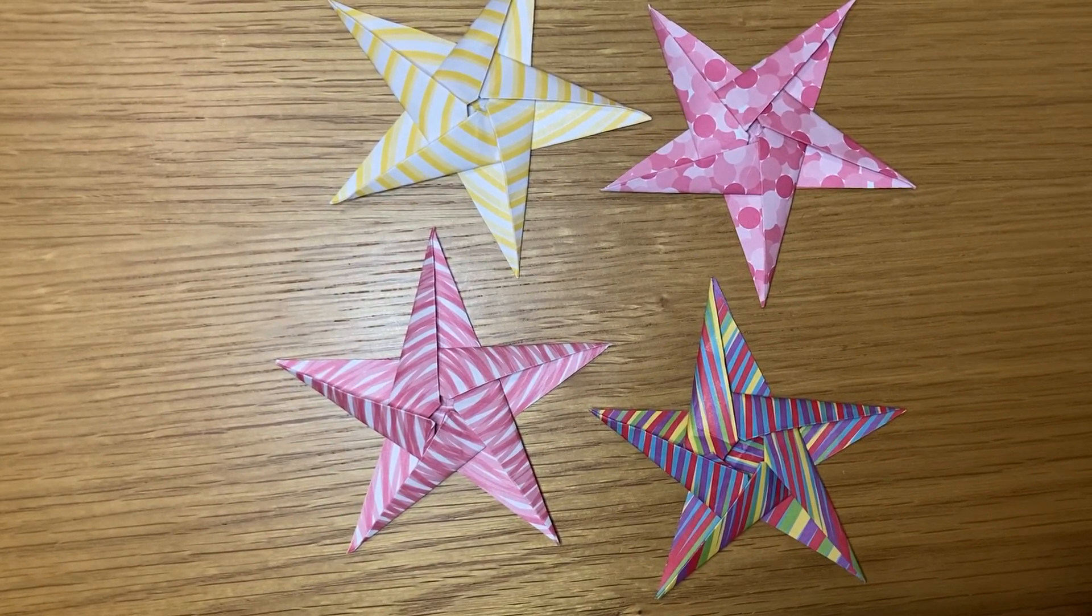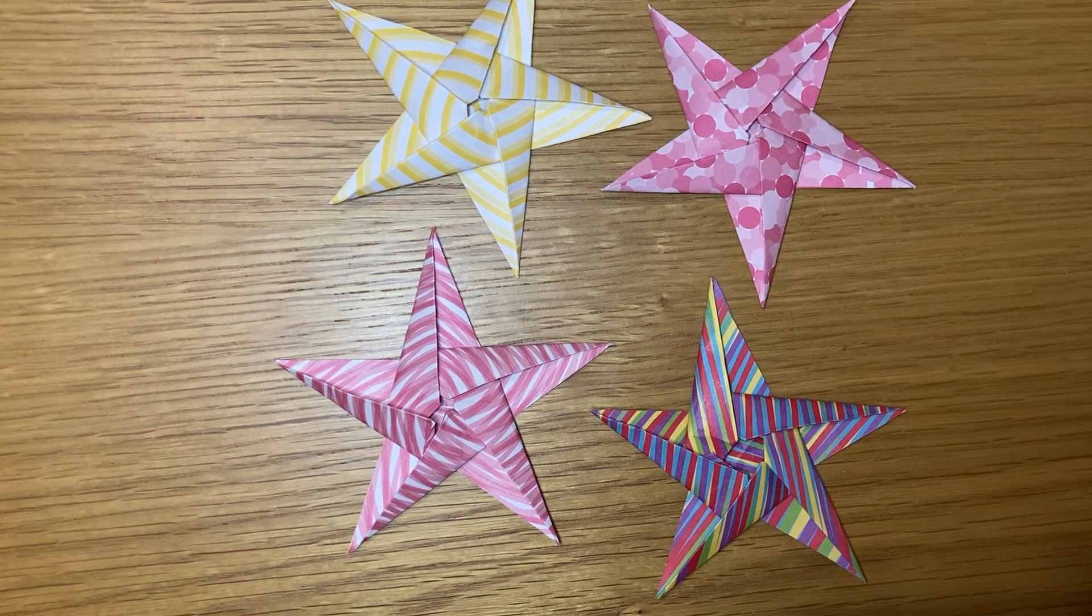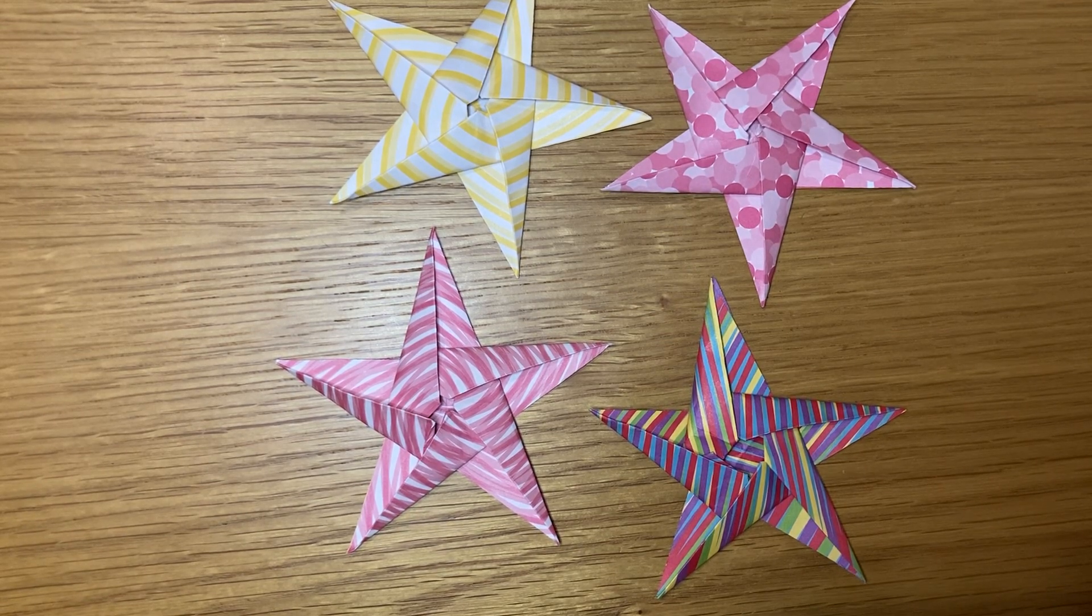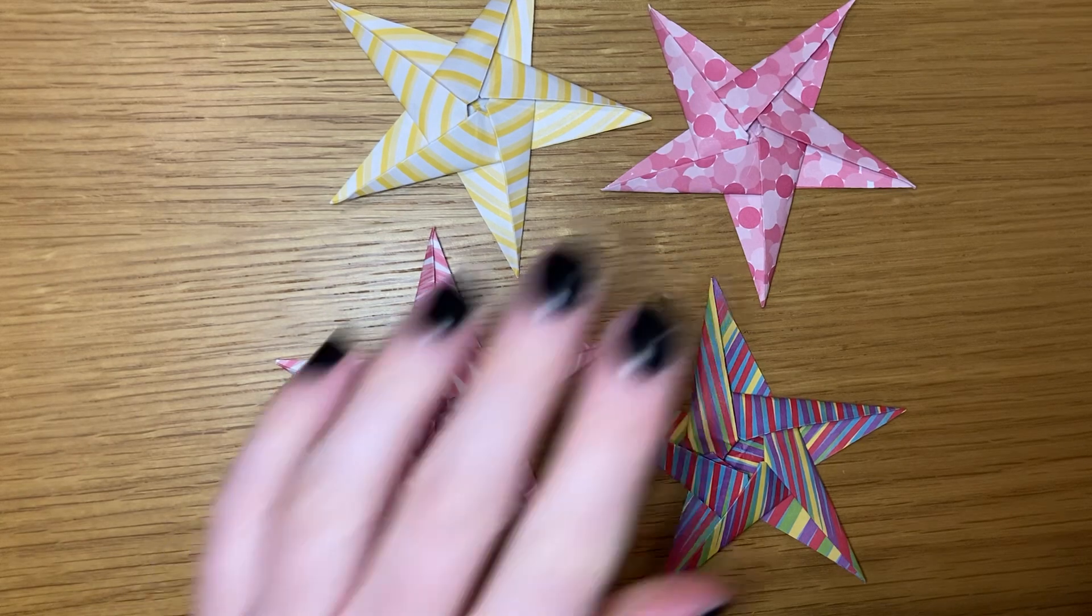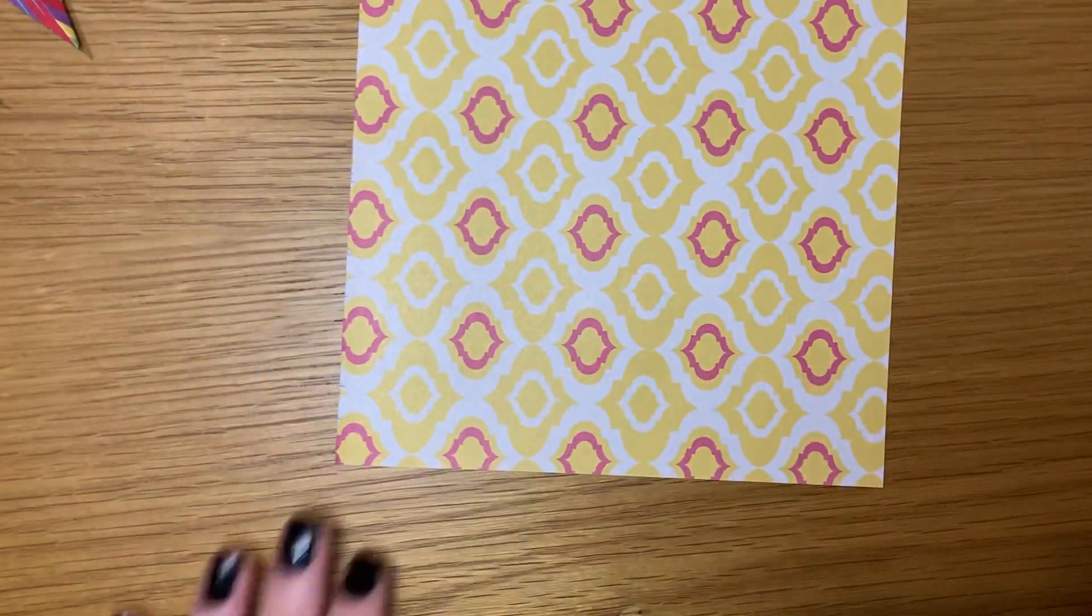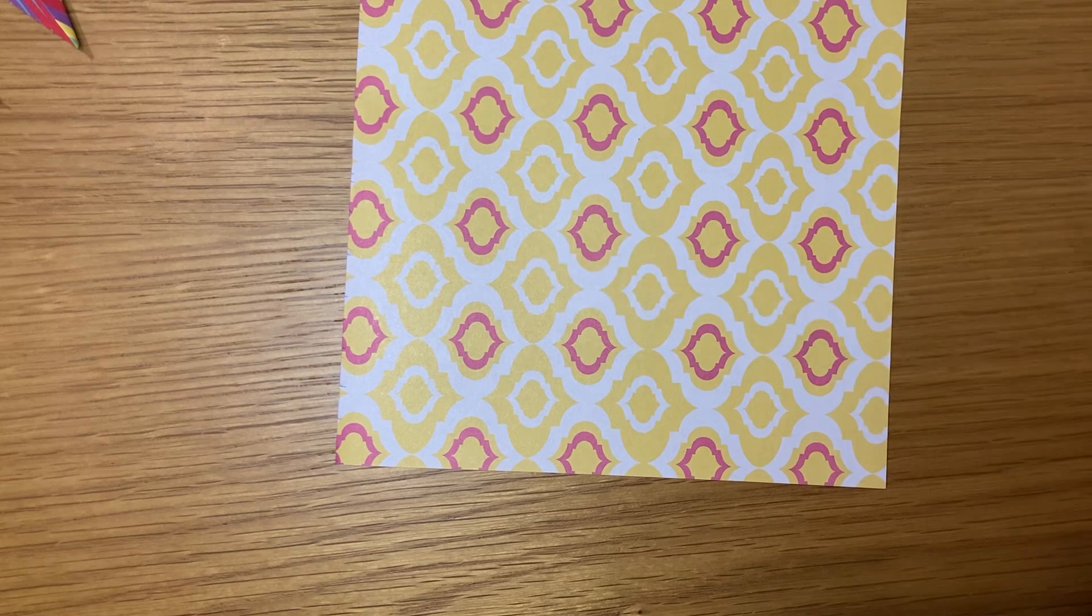Hello, welcome back. I'm Pixie and today we are going to be making a five-pointed origami star. You will need a piece of origami paper and a pair of scissors for this one.